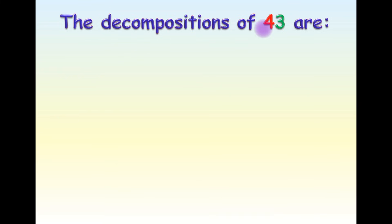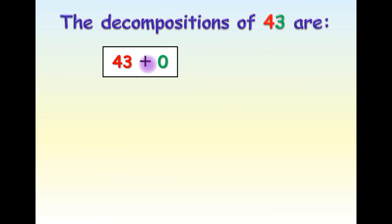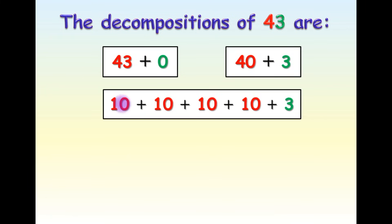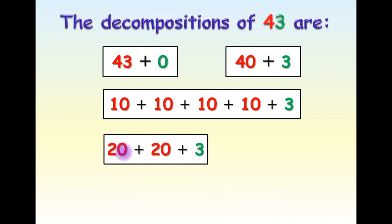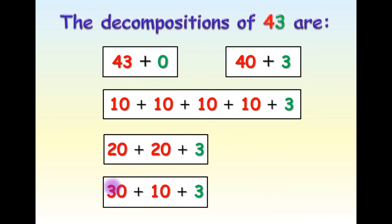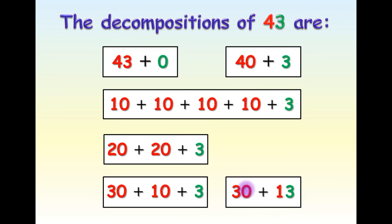The decompositions of 43 are: 40 plus 3; 10 plus 10 plus 10 plus 10 plus 3; 20 plus 20 plus 3; 30 plus 10 plus 3; and 30 plus 13. The end.